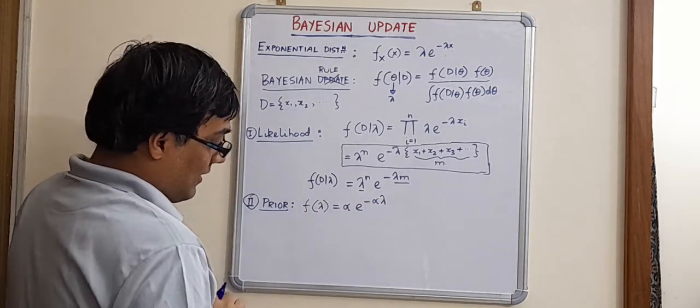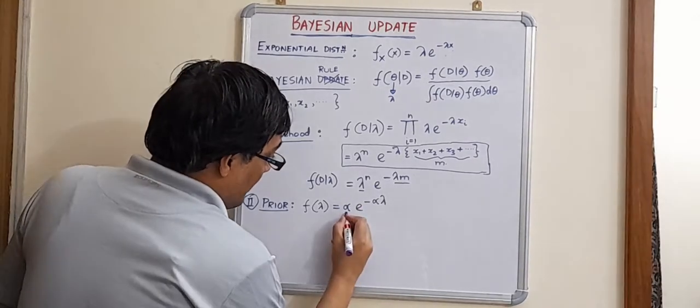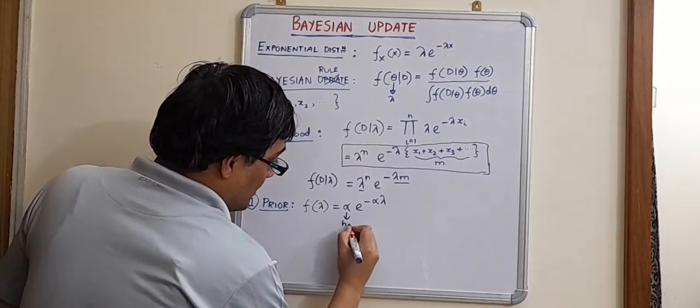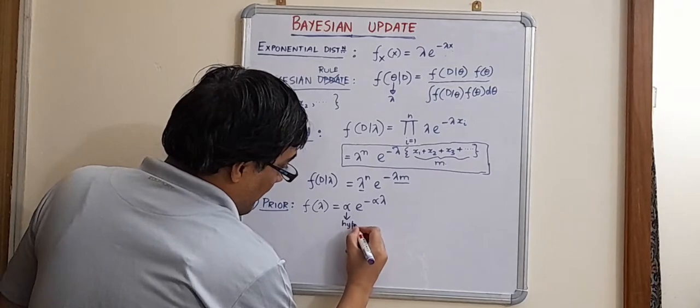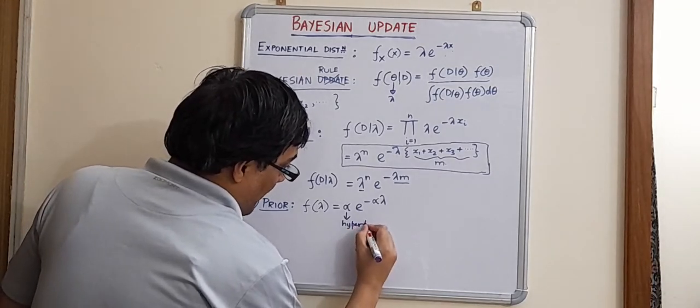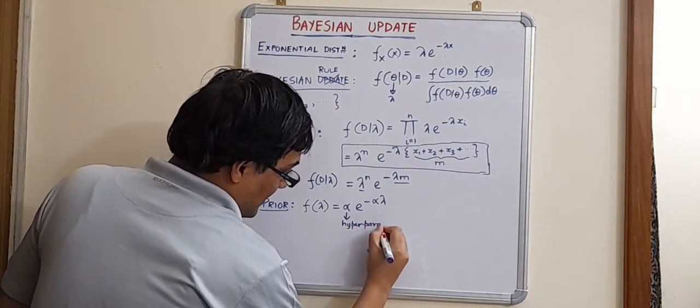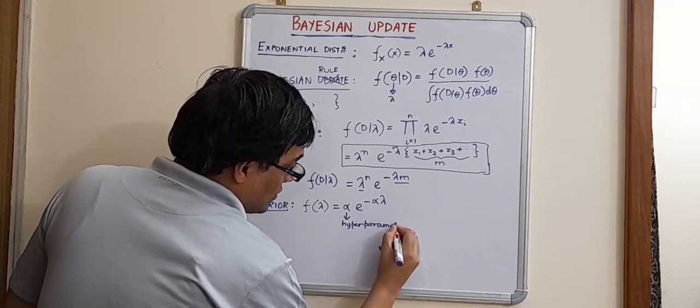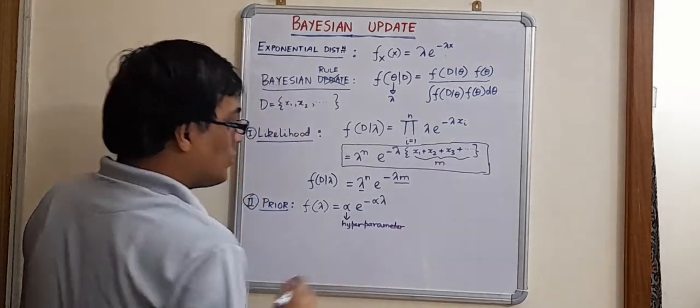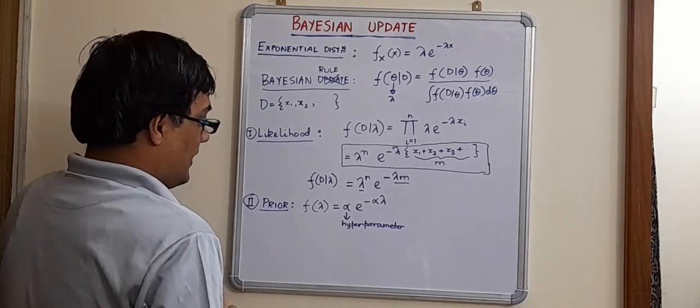And what is this alpha? This alpha is called the hyper parameter. This is sometimes called as the hyper parameter. Well, I have talked about hyper parameters in my slide, in my basically the presentation. So you can go through that. The whole idea.